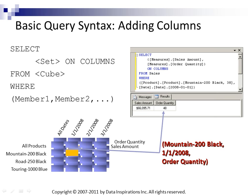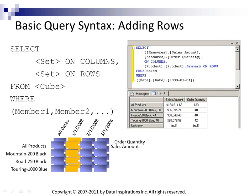Then when we add in rows, we can continue this process. Here we have our measures still on columns, but now we've added a set of products — product.products.members — which means we're going to get the all level as well as the individual products. Notice the WHERE clause now just contains states. So products get put on rows, measures on columns, and then all of these individual tuples get created.